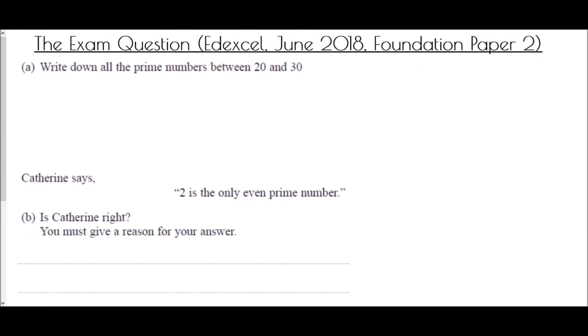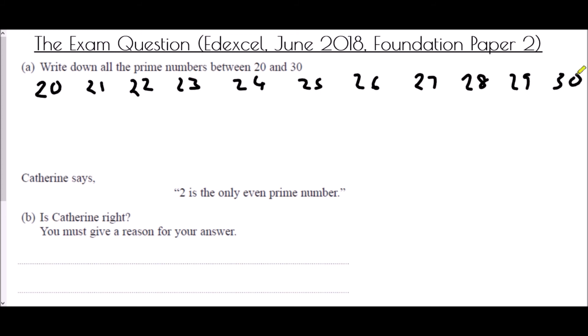Now for an exam question from the Edexcel paper in June 2018 — Foundation Paper 2, which is a calculator paper. The question is: write down all the prime numbers between 20 and 30. Let's try without a calculator. Write down all numbers between 20 and 30: 20, 21, 22, 23, 24, 25, 26, 27, 28, 29, 30. Check each — 20 is in the 10 times table, so it is not prime.